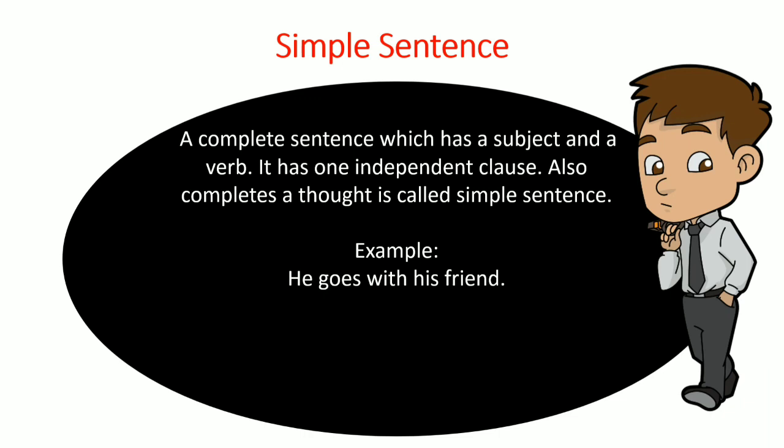'He' is the subject and 'goes' is the verb. If we simply say 'he goes,' does it make sense? But if we say 'he goes with his friend,' it makes a complete thought — not with teacher, not with parents, but with friends. So it shares a complete meaning. That is a simple sentence. Now let's look at another example: 'He looks at the beautiful building.' Here 'he' is the subject and 'looks' is the verb.